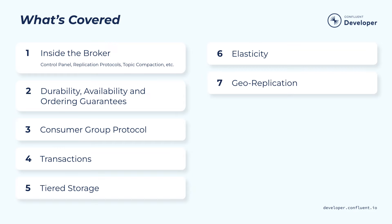Here's what we'll cover in this course. First, we're going to look into what's inside a broker. We're going to talk about how the data plane works, the control plane works, and also how key-based topic retention works through compaction. We're also going to cover some of the guarantees, including durability guarantee and ordering guarantee. Then we're going to look into some more advanced capabilities, such as group consumption, transactions, tier storage, elasticity, and geo-replication.